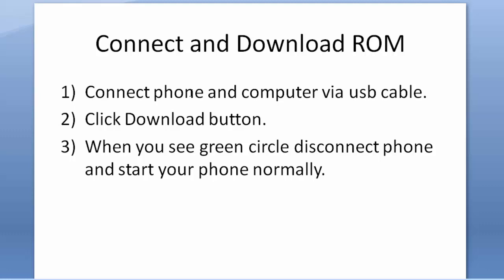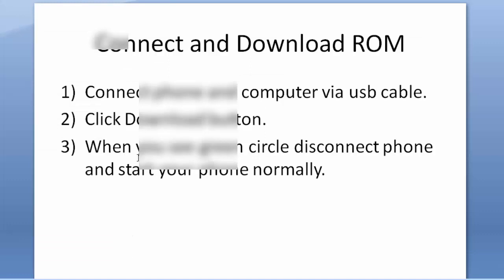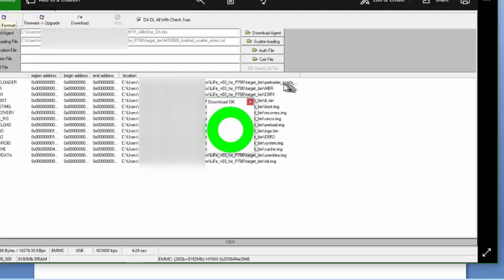Second, click the Download button. If nothing happens, it means you did not connect the phone and computer properly. If something happens like shown here, that is a good sign. When you see the green circle, disconnect the phone and start your phone normally. I will show you a screenshot of the green circle — here is what it looks like.